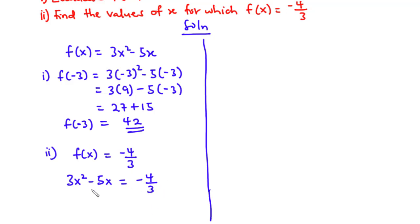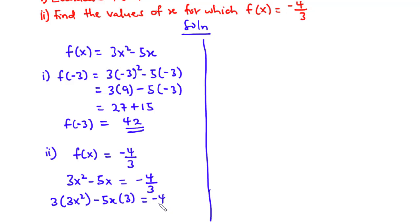To eliminate the fraction, we multiply each of the terms by 3. So 3 times 3x squared minus 5x times 3 equals negative 4 over 3 times 3. This gives us 9x squared minus 15x equals negative 4.